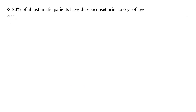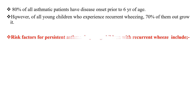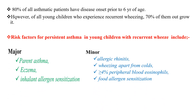80% of all asthmatic patients have disease onset before 6 years of age. However, of all young children who experience recurrent wheezing, 70% outgrow it. Risk factors for persistent asthma in young children with recurrent wheezing are classified as major and minor. Major factors are parental asthma, eczema, and inhalant allergen sensitization. Minor factors are allergic rhinitis, wheezing apart from colds, eosinophilia on peripheral blood more than 4%, and food allergen sensitization.